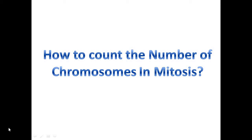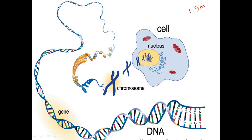Hello friends, today in this video we will discuss how to count the number of chromosomes in mitosis. Chromosomes are usually a tightly coiled structure of DNA. Being very large in size — around 1.5 meters — DNA is not able to fit within the nucleus of a cell. To fit inside a nucleus, it needs to be packaged into a tightly coiled structure. For that, there are several proteins present within the nucleus, such as histones. Histones form octomers and wrap around DNA, packaging them into tightly coiled structures known as chromosomes.